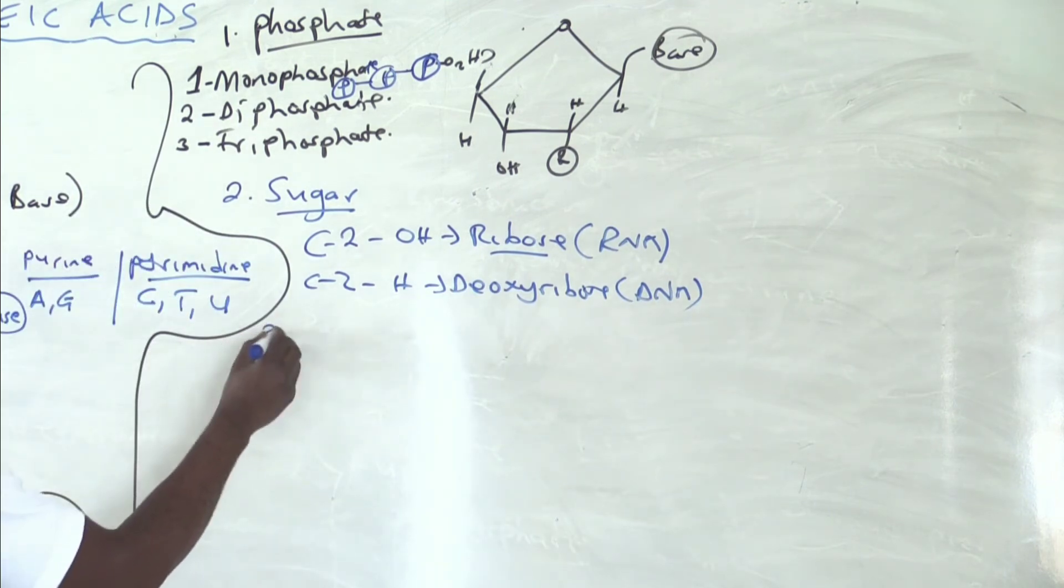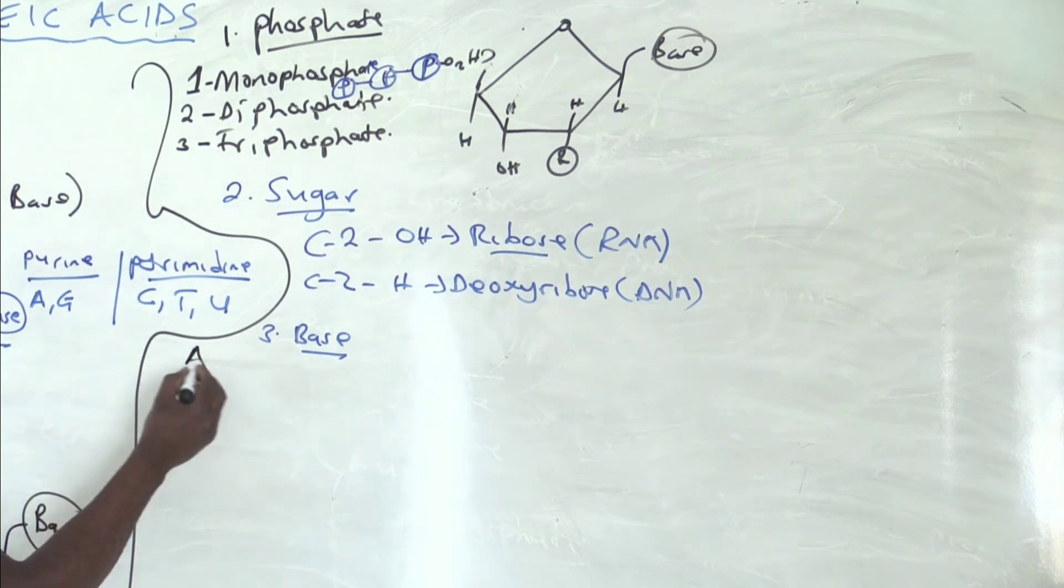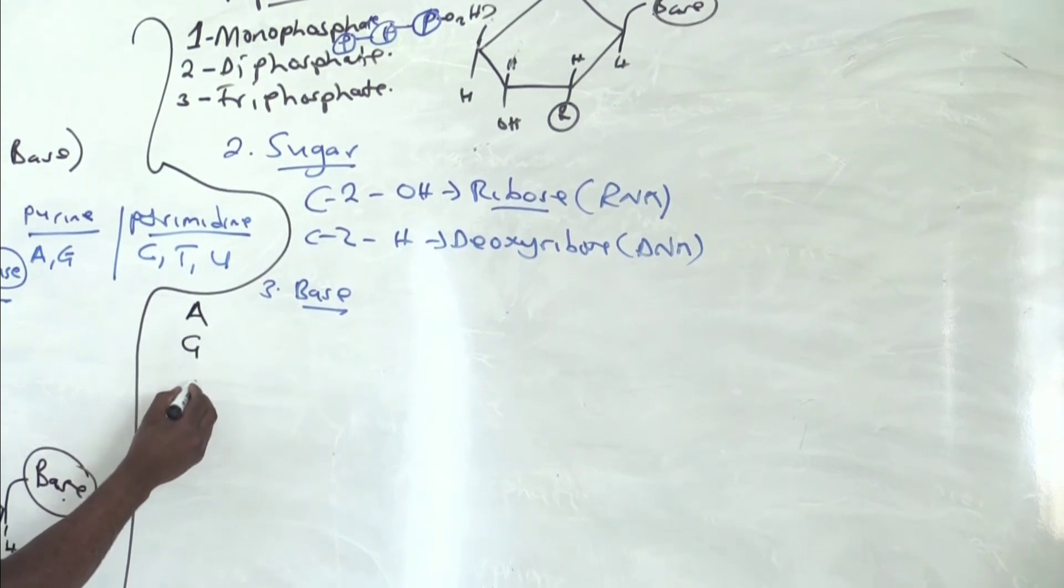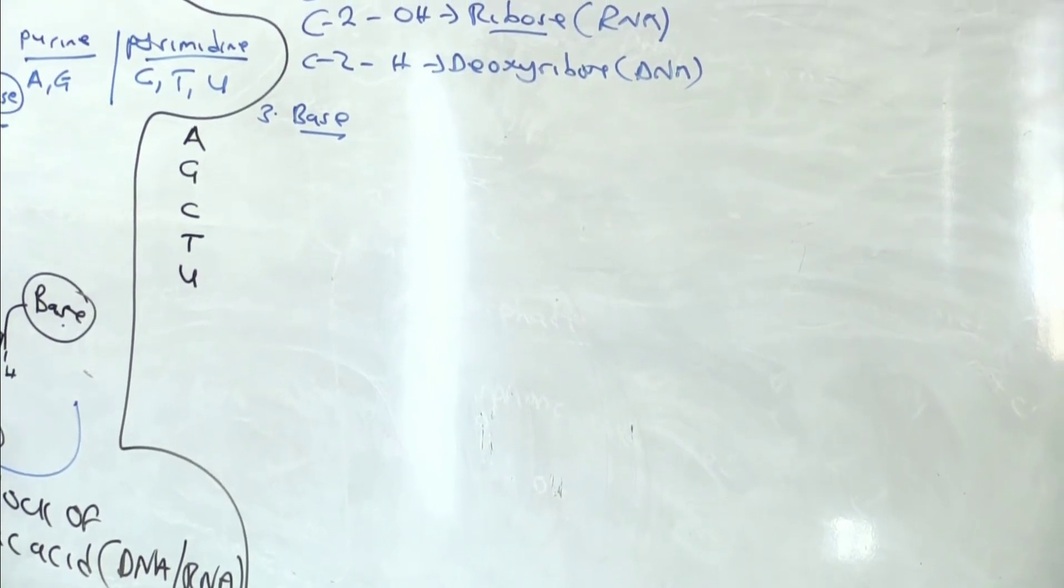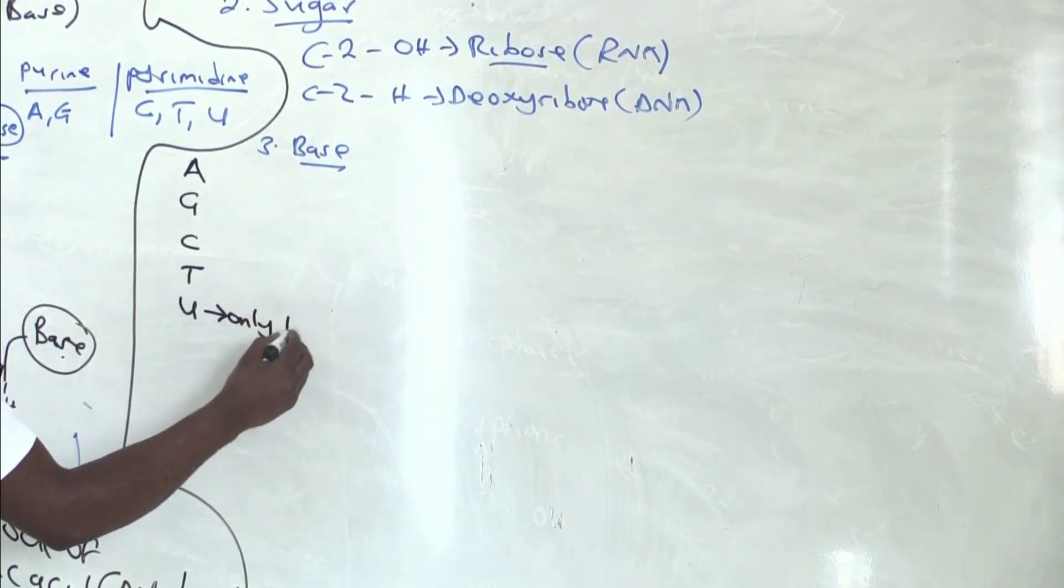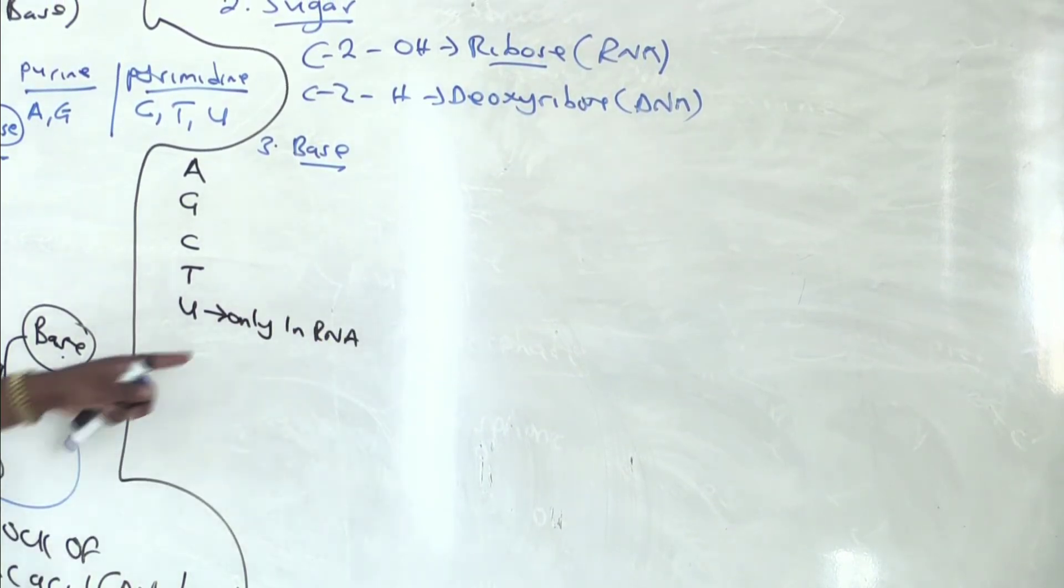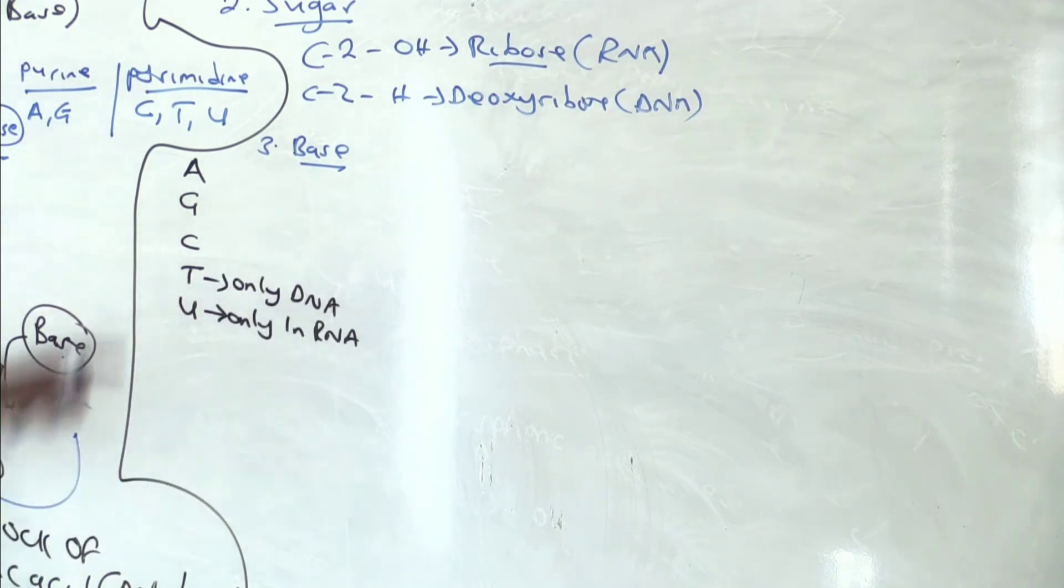Let us go to a base. This part. So for a base, you can decide to attach adenine, guanine, cytosine, thymine, or uracil. But what should you note? We only use uracil only in RNA. So uracil as a base can only be used when you are making RNA. Thymine can only be used when you are making DNA. But the other three could be used in both DNA and RNA.